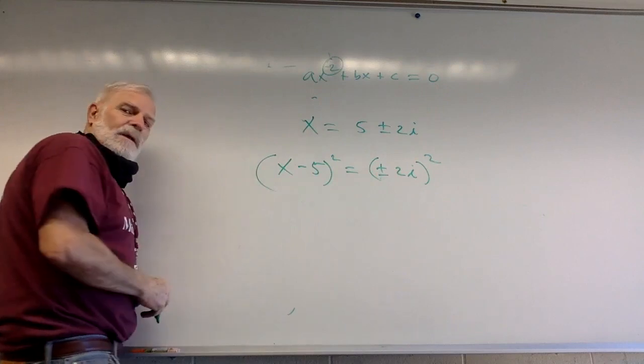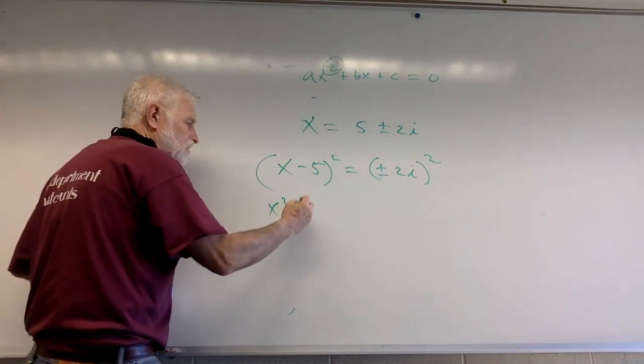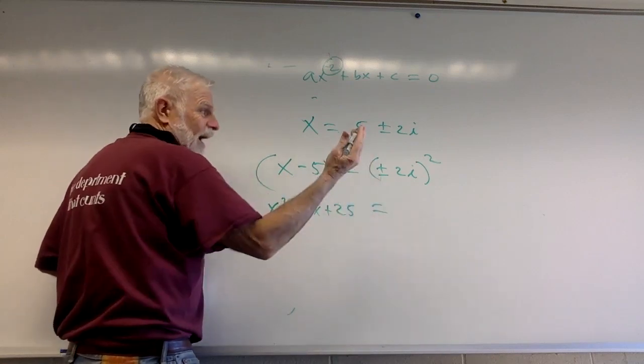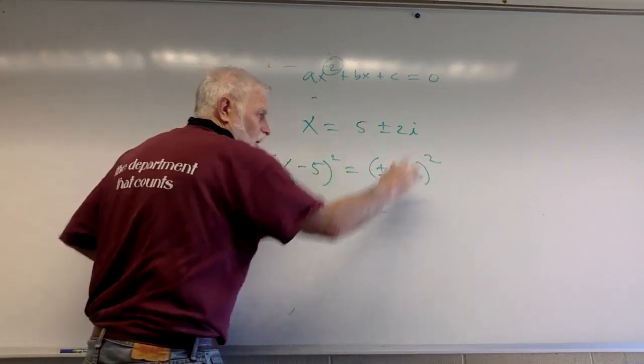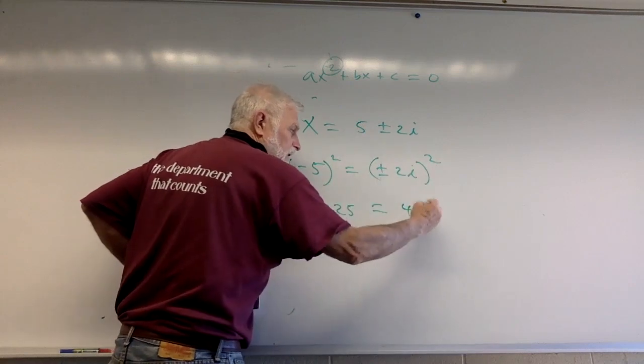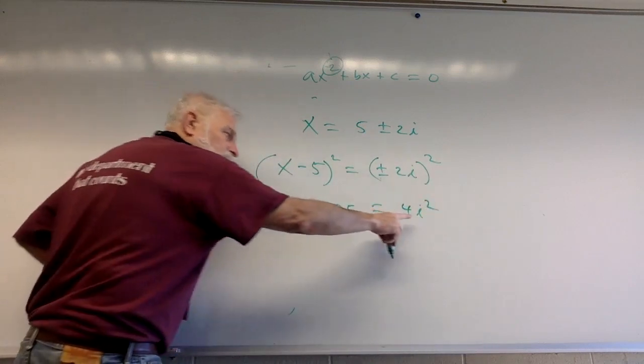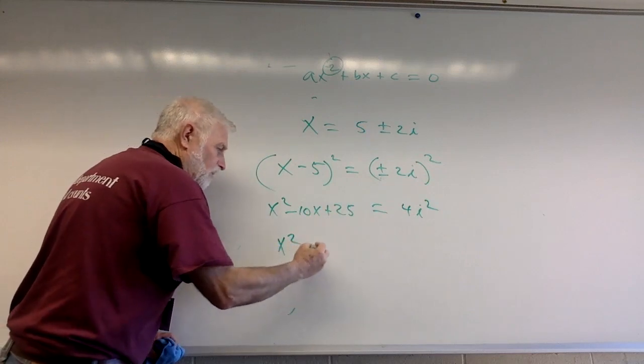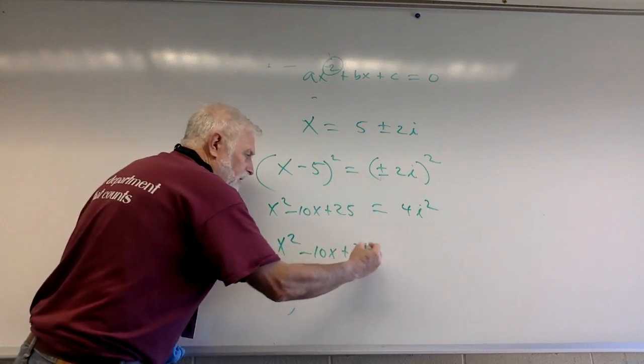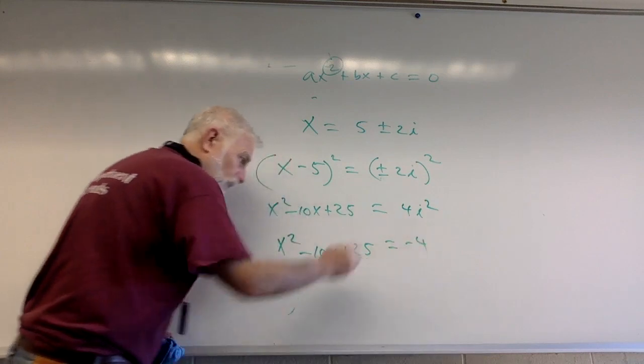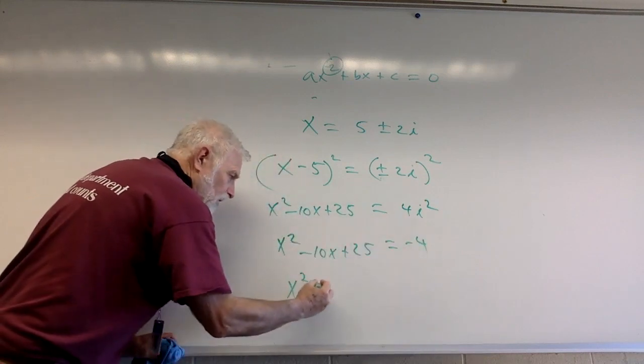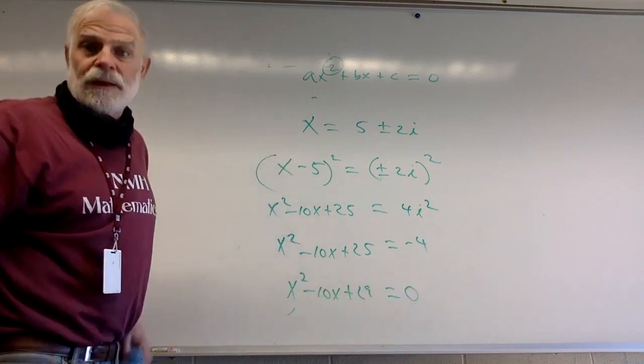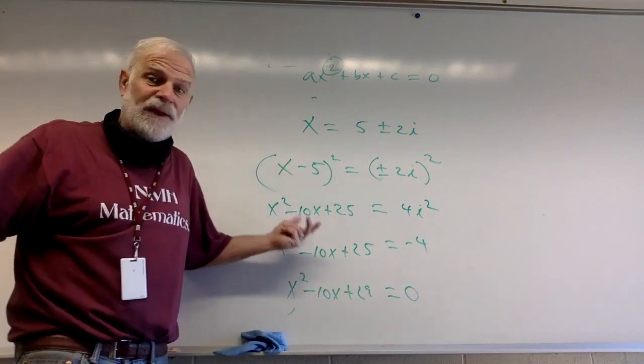I hope we're getting better at the squaring. I hope you're getting x²-10x+25. ±² is positive, so we won't write it. 2² is 4, i² is i², and I hope you know that that's the number -4. So x²-10x+25=-4. Bring the 4 over: x²-10x+29=0.